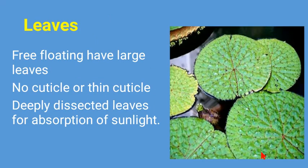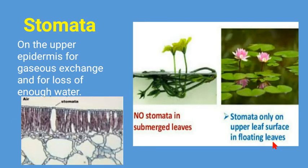Leaves are broad and floating on the surface of the water. They have a cuticle which is very thin, or in some cases there is no cuticle, because the cuticle prevents evaporation of water, and in hydrophytes water needs to be evaporated. Leaves are deeply dissected for the absorption of sunlight. Stomata are found on the upper epidermis.